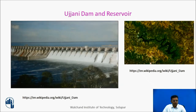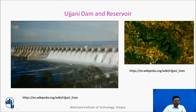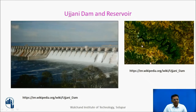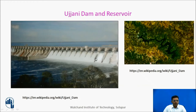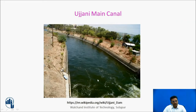Now let us see the actual system. This is Ujani Dam and this is the Ujani Reservoir. This is a spillway over which water is passing. The reservoir is seen here in an image taken from Google Earth, showing the spread of water on the upstream side of the dam. A canal — the Ujani main canal — comes out from this dam and releases water for the dam command area.